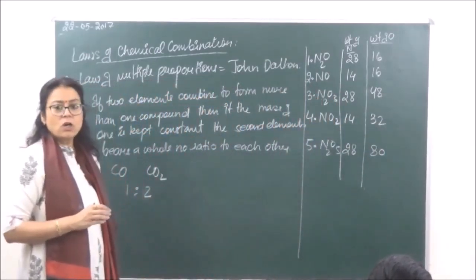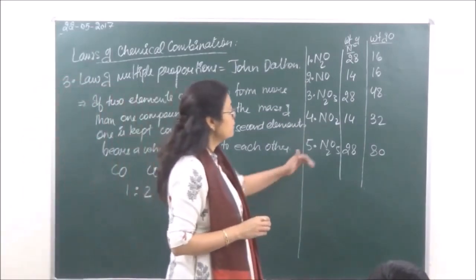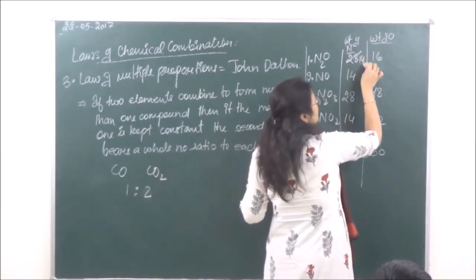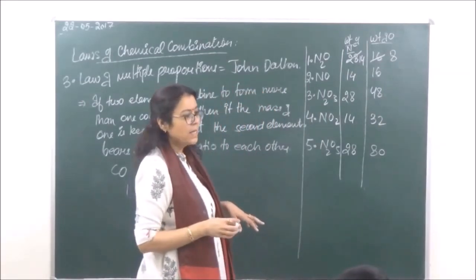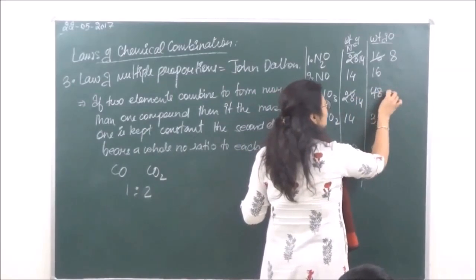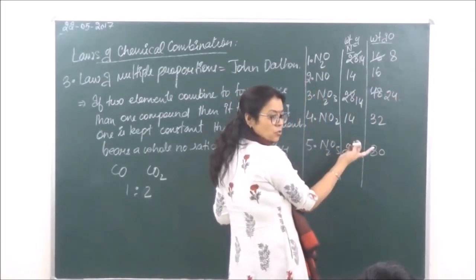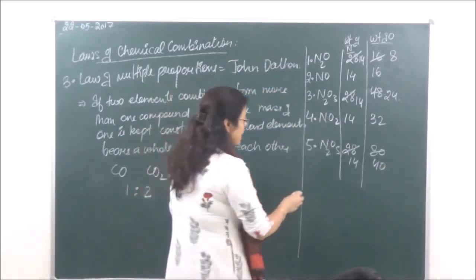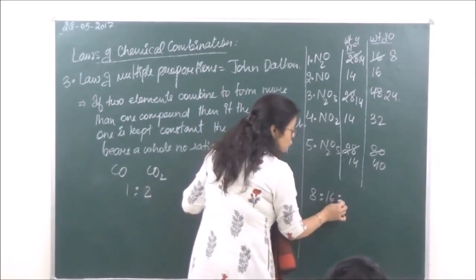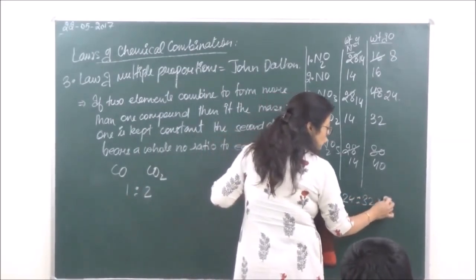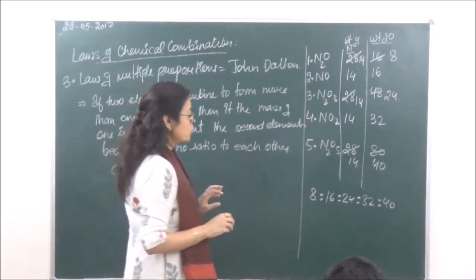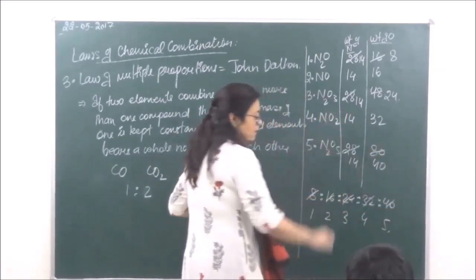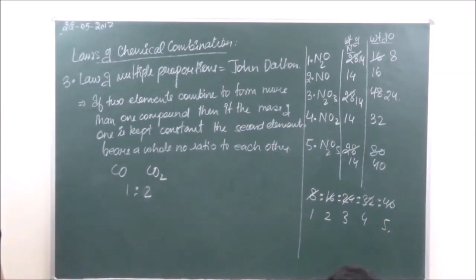According to the law, we fix nitrogen at its minimum value of 14. So we adjust each compound accordingly. The corresponding weights of oxygen become 8, 16, 24, 32, and 40. Converting to simplest whole number ratio: 8 is to 16 is to 24 is to 32 is to 40, which simplifies to 1 is to 2 is to 3 is to 4 is to 5. So the ratio of oxygen is a whole number ratio.